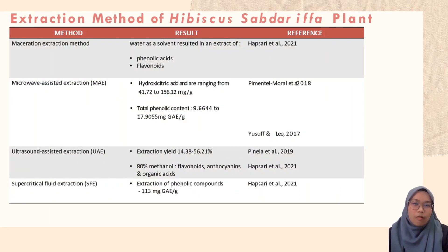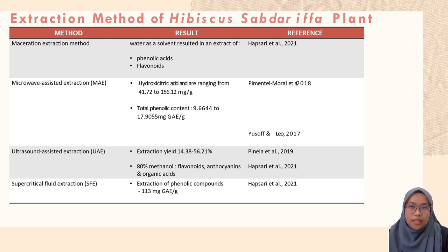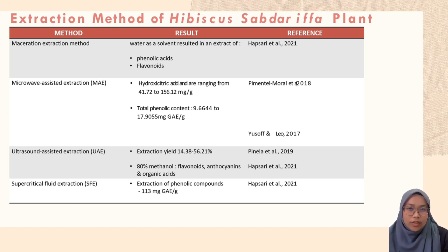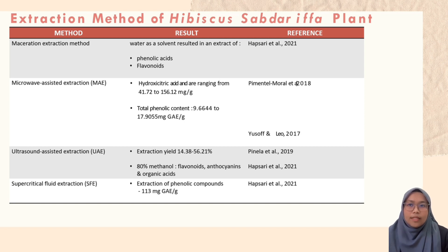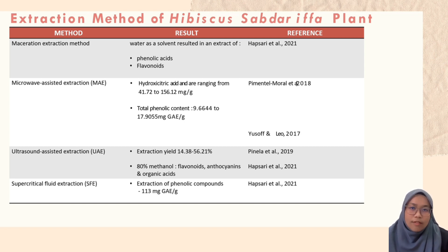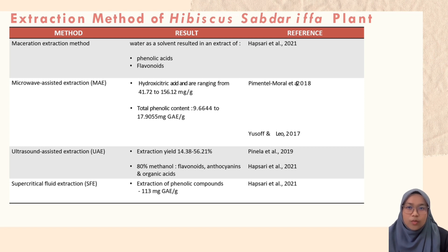As we can see, there are 4 extraction methods of Hibiscus sabdariffa plant. The first is maceration extraction method. According to Hubsari, using water as a solvent resulted in an extract of phenolic acid and flavonoids. The second extraction method is microwave-assisted extraction. Pimentel Lora mentioned that there was hydroxycitric acid and hibiscus acid from Roselle extract ranging from 41.72 to 156.12 mg per g. Another research from Yusof and Leo found 9.644 to 17.9055 mg GAE per g of total phenolic content.